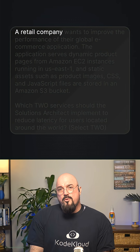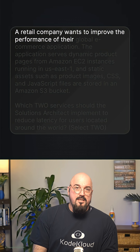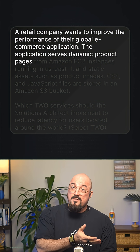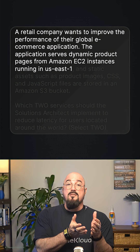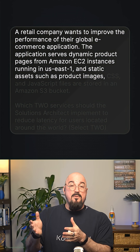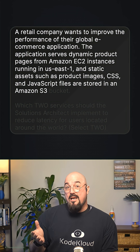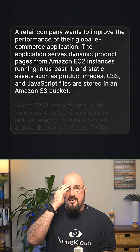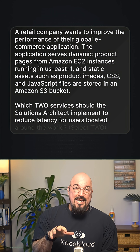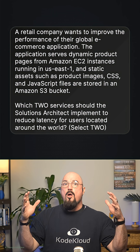A retail company wants to improve the performance of their global e-commerce application. The application serves dynamic product pages from EC2 instances running in US-East-1, and it has static assets such as images, CSS, and JavaScript files that are stored in an Amazon S3 bucket. Which two services should the Solutions Architect implement to reduce latency for users located around the world?